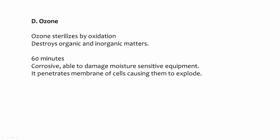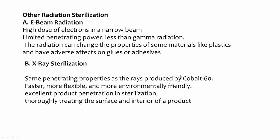Ozone is a very good oxidant that can sterilize in generally 60 minutes, but it is also very corrosive and may damage moisture-sensitive equipment. It penetrates membrane cells causing them to rupture. Other radiation sterilization methods include x-ray and e-beam (electron beam radiation). E-beam uses a high dose of electrons in a narrow beam but has limited penetrating power compared to gamma radiation. Radiation can change material properties — especially plastics may lose mechanical or optical properties. X-rays have similar penetrating properties to cobalt-60, are faster, more flexible, more environmentally friendly, and good for thoroughly treating both the surface and interior of a product.